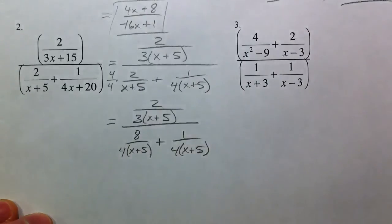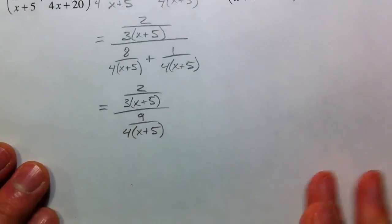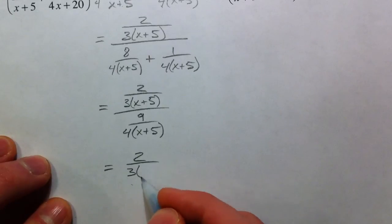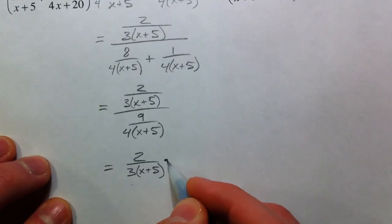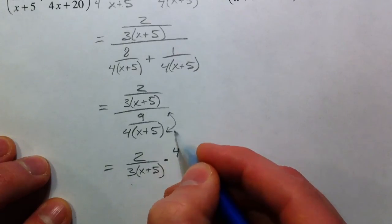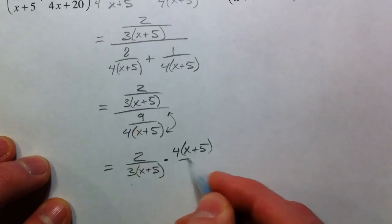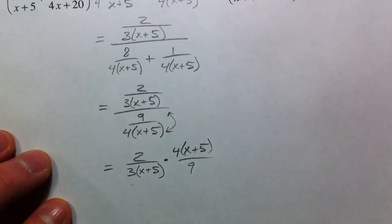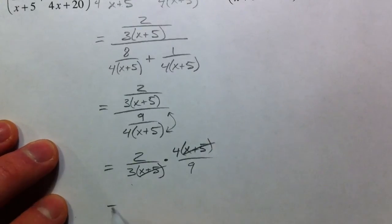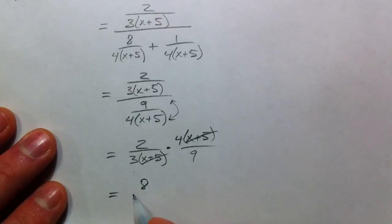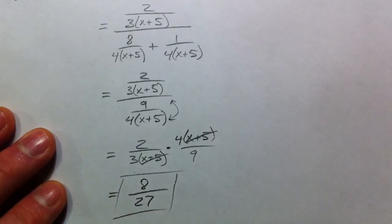And so we're going to combine those and get 9. The next step is going to be multiplying by the reciprocal. And so let me fill in this middle step. So flip it, multiply by the reciprocal, 2 over 3 times x plus 5, times 4 times x plus 5 over 9. So they have an x plus 5 in common, so we can cross those out. And 2 times 4 is 8, and 3 times 9 is 27. So all of the x's cancelled out and we were left with just 8 over 27.